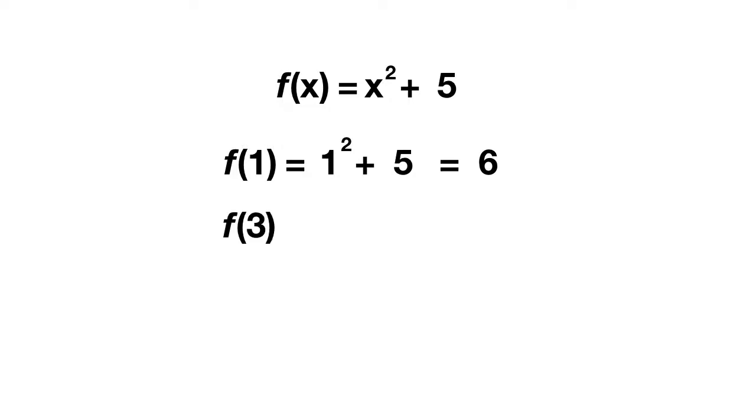Solve for f of three. Well here, again you replace your x now with a three, so we have three squared plus five. Well three squared is nine, plus five equals fourteen. Now solve for f of five. Well to do this, you would just solve five squared plus five. And five squared equals twenty-five, twenty-five plus five gives you thirty.